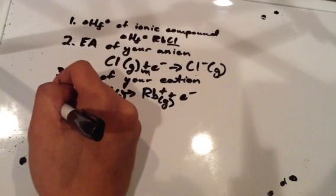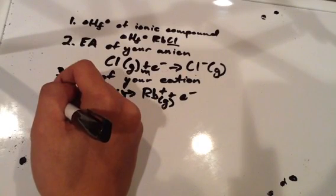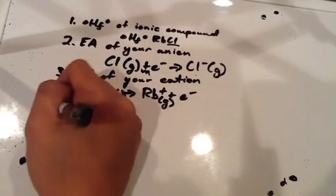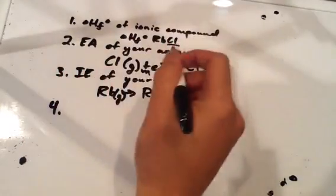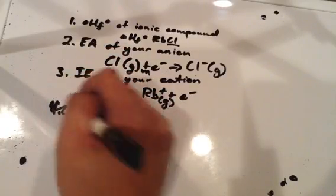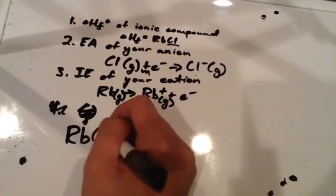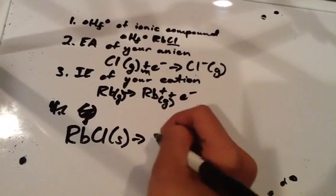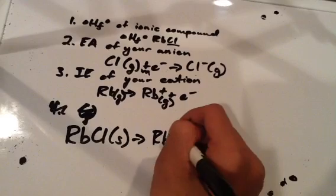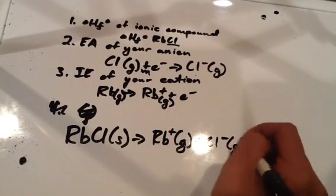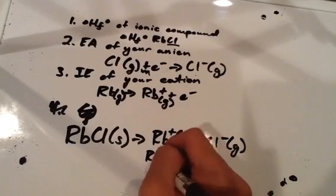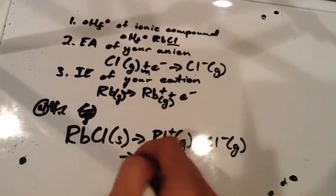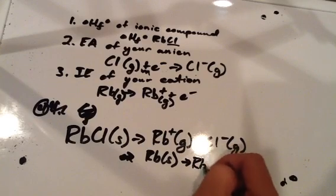Because we're pulling these out of a gas form, to calculate our total lattice energy we want these in a gas form. We wanted rubidium in gas form as Rb+, and we wanted Cl- in gas form. Actually, rubidium in its natural elemental form is a solid. So what we really want as step four is to convert this solid into a gas.